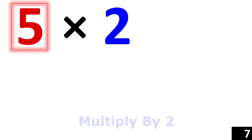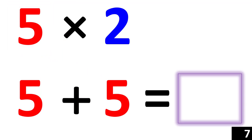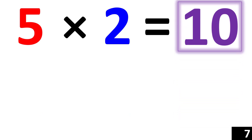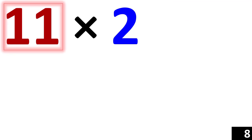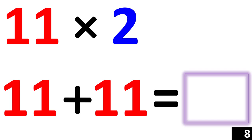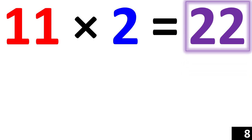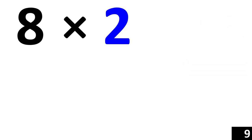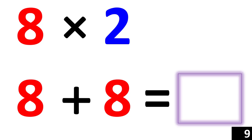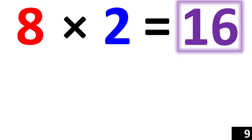Here we have 5 times 2. 5 times 2 is the same thing as 5 plus 5. 10. So 5 times 2 equals 10. 11 times 2 is the same thing as 11 plus 11. 22. So 11 times 2 equals 22. 8 times 2 is the same thing as 8 plus 8. 16. So 8 times 2 equals 16.